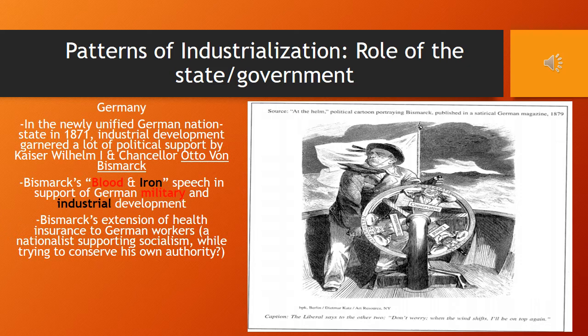After 1871, the newly unified German nation's industrial development garnered political support by Kaiser Wilhelm I and Chancellor Otto von Bismarck. Bismarck's blood and iron speech in support of German military and industrial development showcased Germany's priorities as it sought to surge past England as Europe's industrial leader. As chancellor, Bismarck pandered to different political and social groups—for example, extending health insurance to German workers while also attempting to permanently disband Germany's Social Democratic Party when he saw it as a threat to his authority. Bismarck's support allowed for Germany to become the most industrialized nation in Europe by the outbreak of World War I.